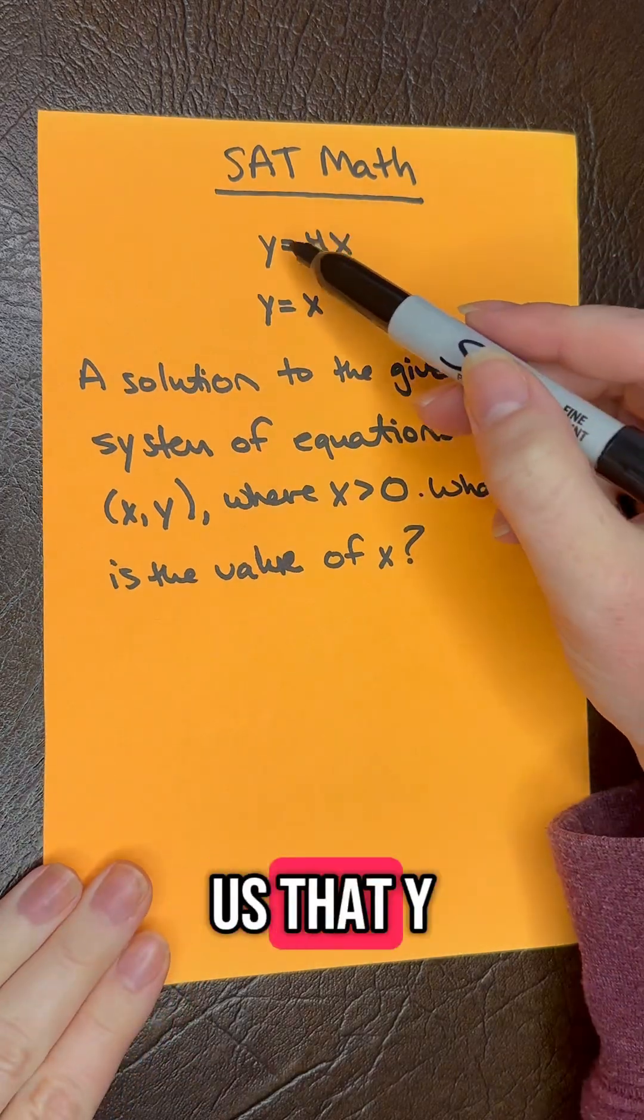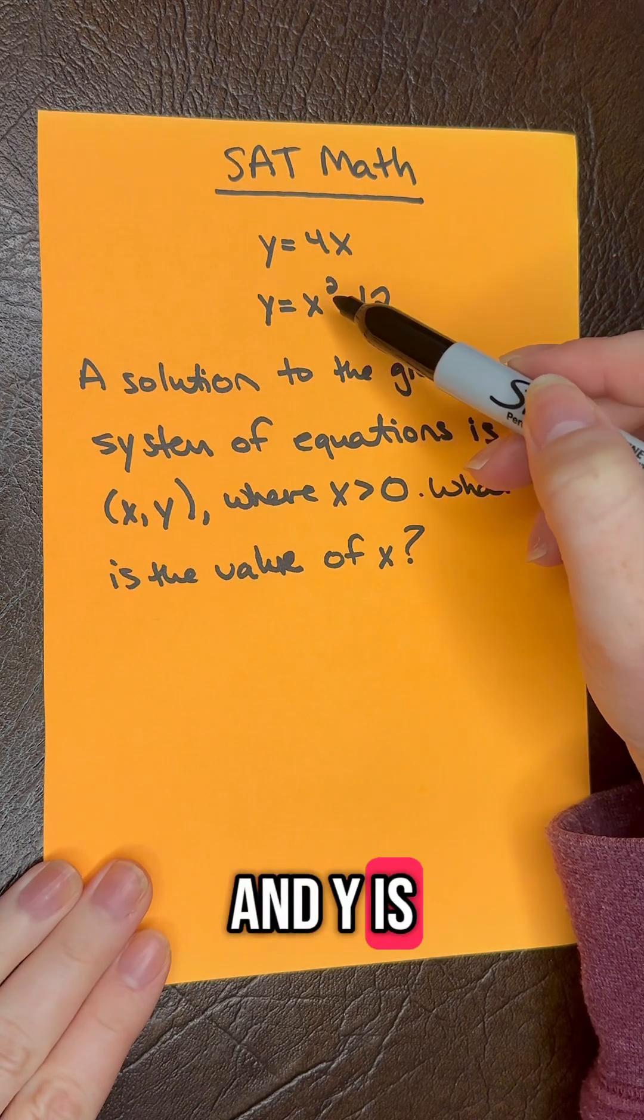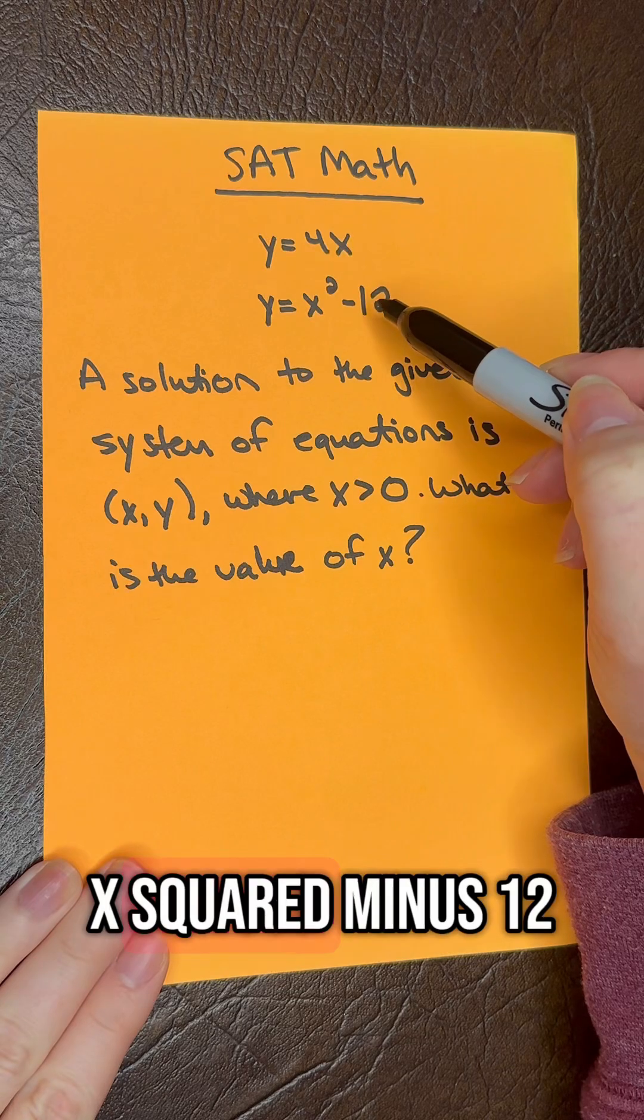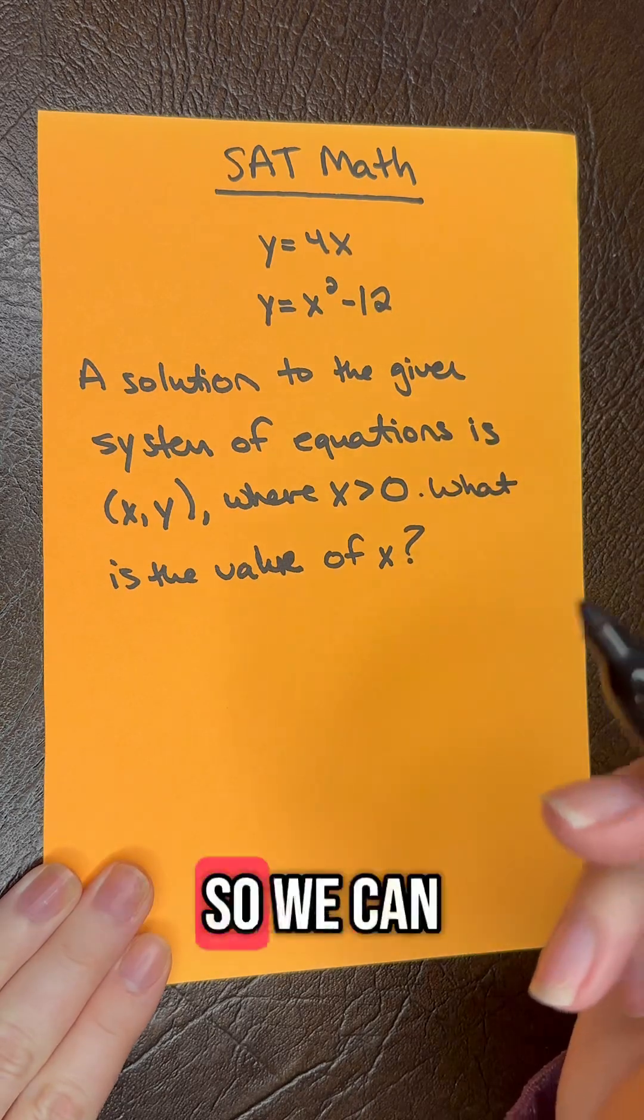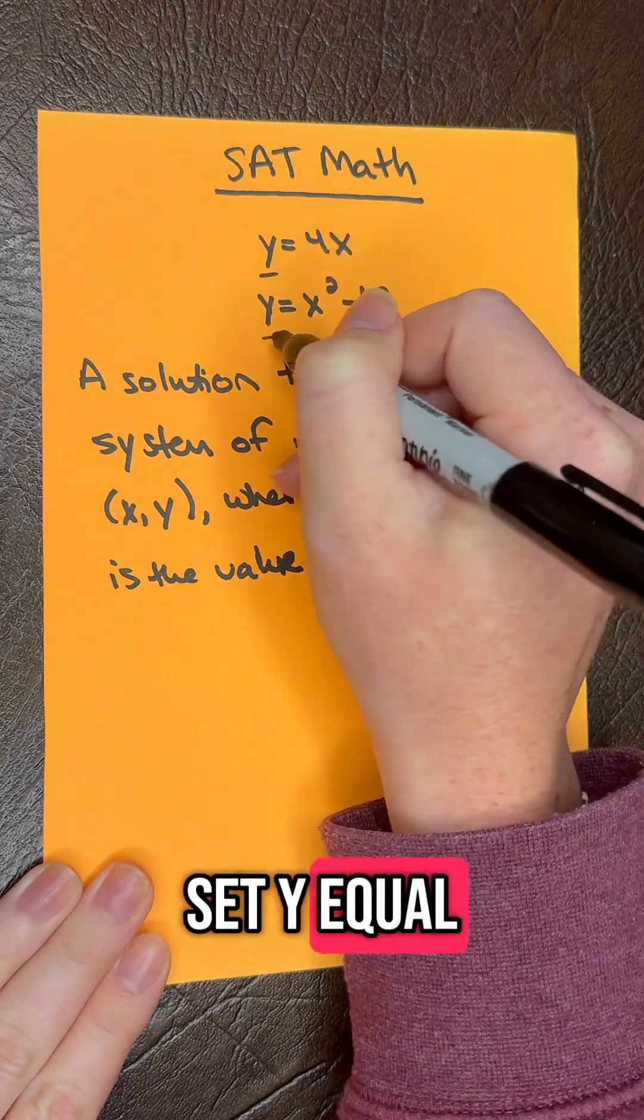So they give us that y is equal to 4x and y is also equal to x squared minus 12. So we can set y equal to y.